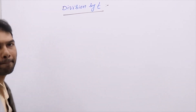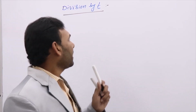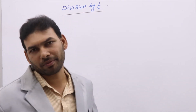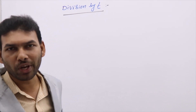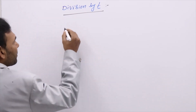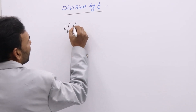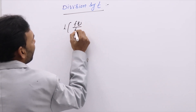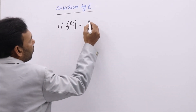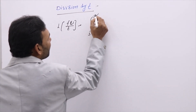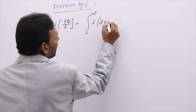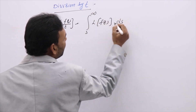So, division by t. When t is in the denominator and the function is in the numerator, what is the principle we are going to apply to evaluate the Laplace transform? This is the principle: L of f(t) divided by t. When t is in the denominator, we are going to integrate the Laplace formula — integral from s to infinity of L{f(t)} ds.